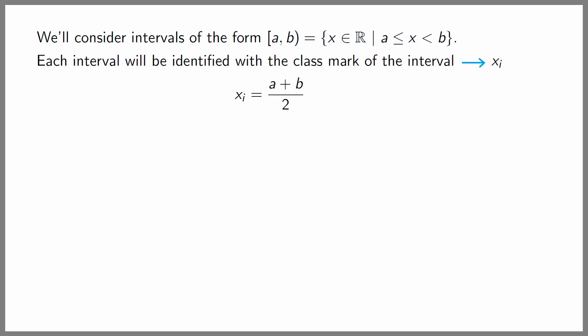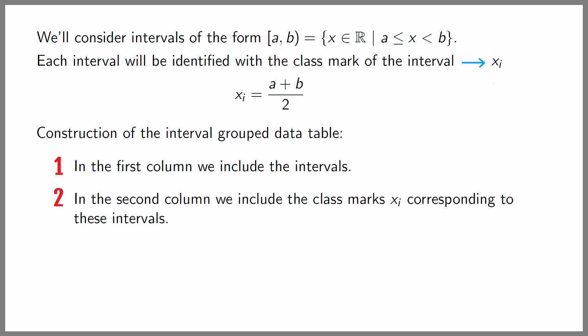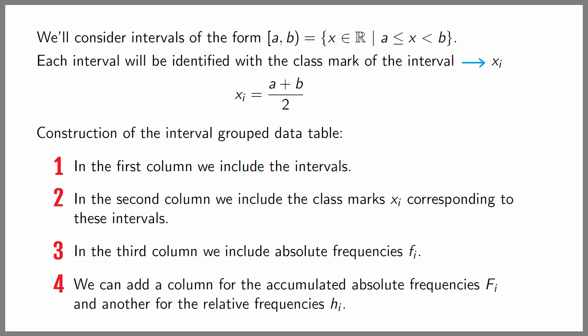Once we have the class marks, the way to build a table of data grouped in intervals is similar to how we obtain the table of simple data. In the first column we include the intervals. In the second, the class marks corresponding to these intervals. Then we add a column with the absolute frequencies F sub i, which are the number of data that belong to the interval in question. Finally, we can also add a column for the accumulated absolute frequencies and another for the relative frequencies.